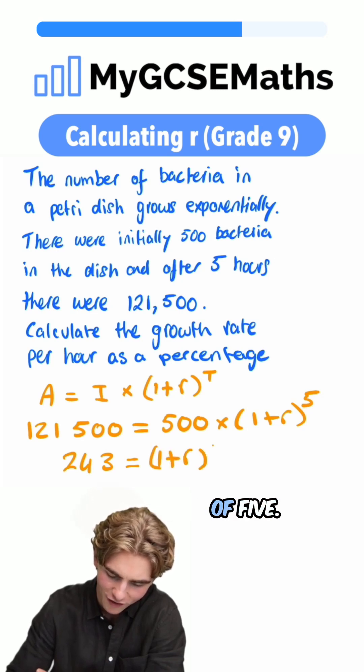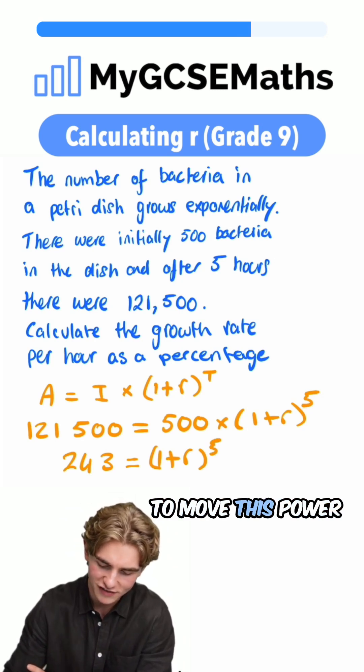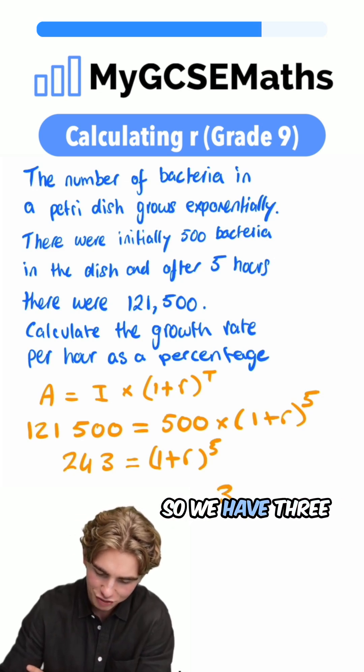Now we can take the fifth root of both sides to move this power of five to the other side. The fifth root of 243 is going to be three, so we have three equals one plus r.